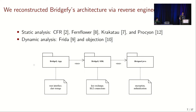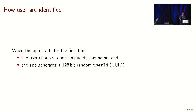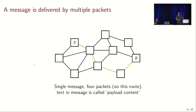The app is not open source, so we had to reverse engineer it. When we open the app for the first time on our phone, we are assigned a 128-bit random integer that serves as our ID in the network.